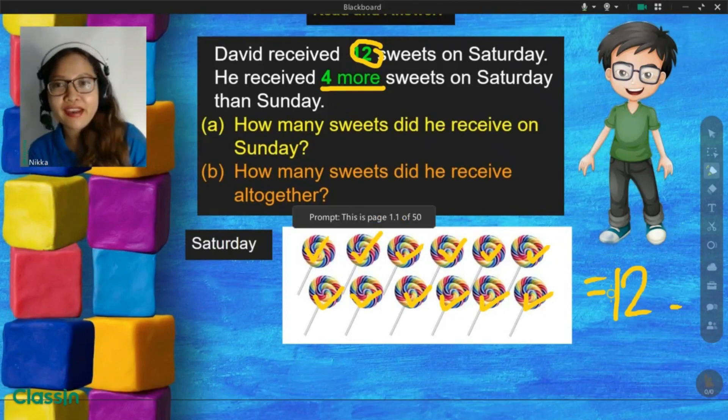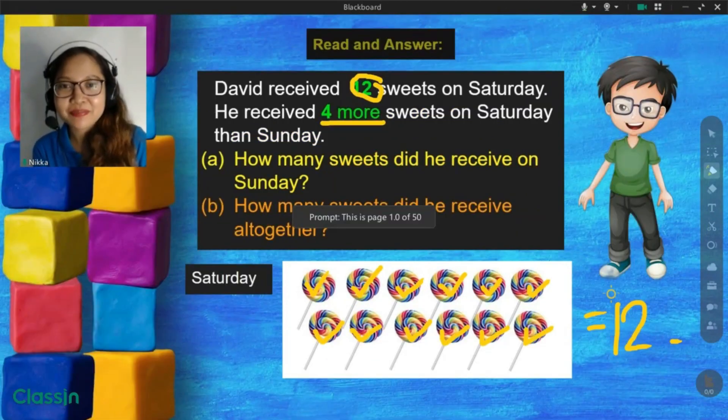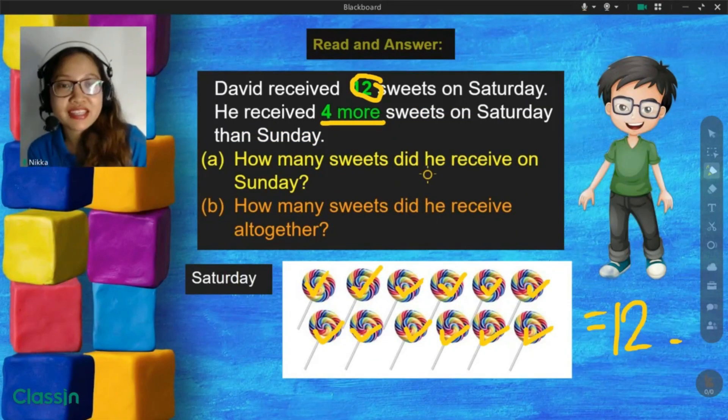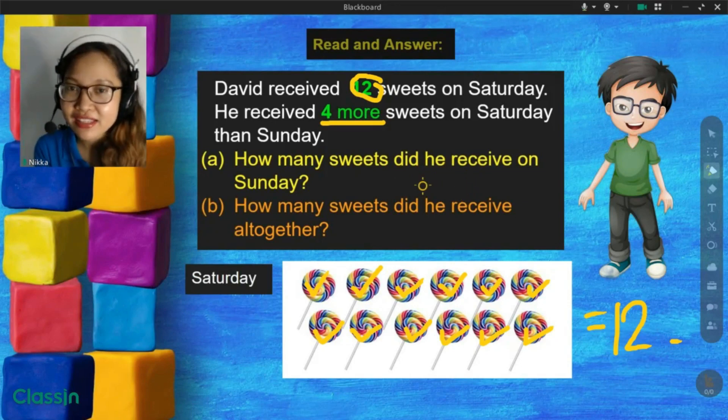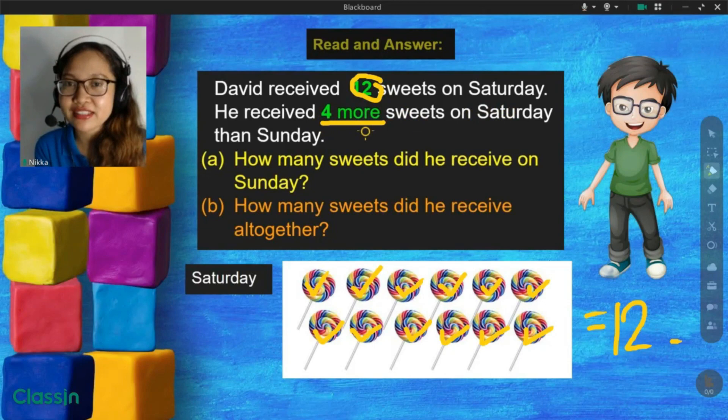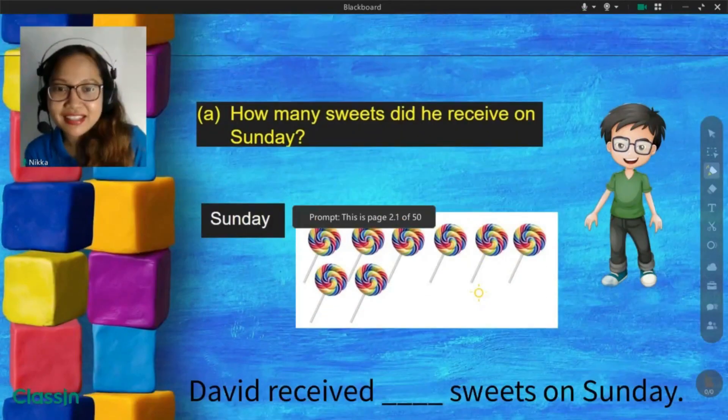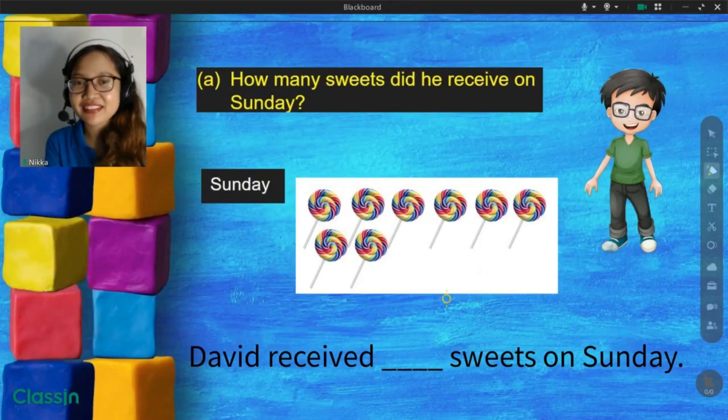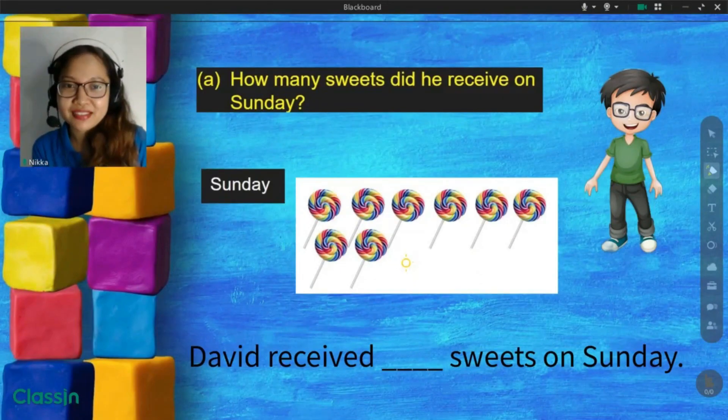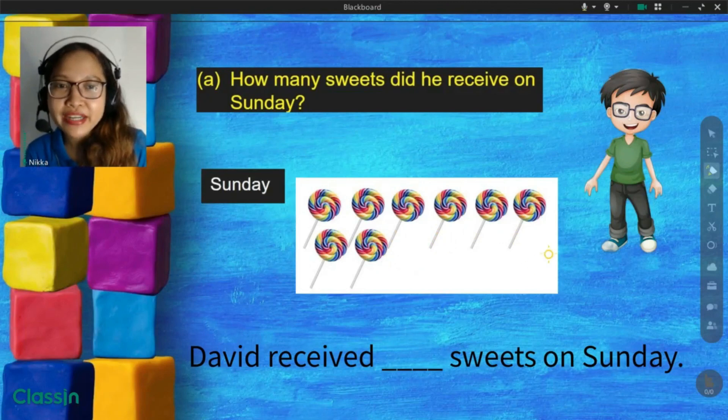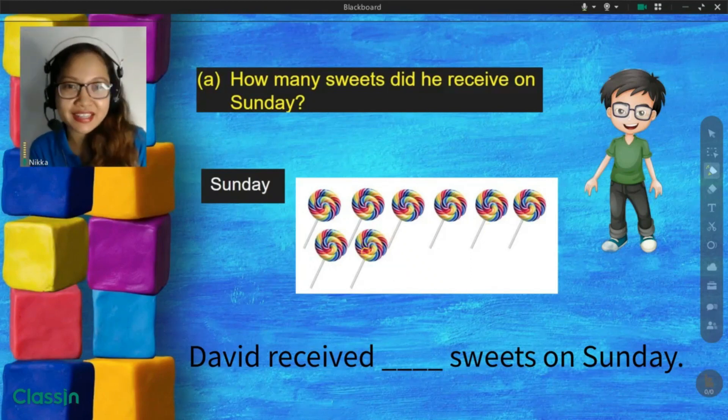And now, we can answer the question. How many sweets did he receive on Sunday? He received 4 more sweets on Saturday than Sunday. So, that's like this one. We removed 4 candies and that's the number of sweets he received on Sunday. Let us count together.